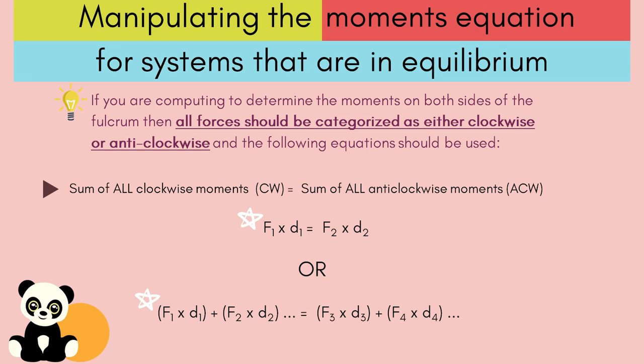Manipulating the moments equation for systems that are in equilibrium. If you are computing to determine the moments on both sides of the fulcrum, then all forces should be categorized as either clockwise or anti-clockwise. And the following equations should be used. Sum of all clockwise moments equal to the sum of all anti-clockwise moments. Here you would have f1 times d1 equals f2 times d2. Or you would use f1 times d1 plus f2 times d2 equal to f3 times d3 plus f4 times d4. And that is when you have a combination of forces acting on the same side.